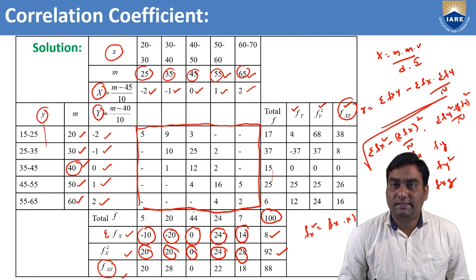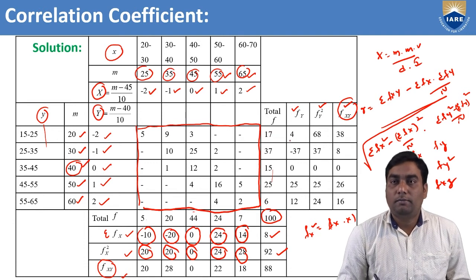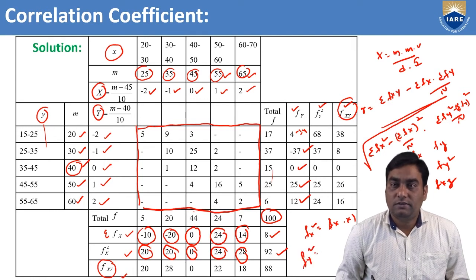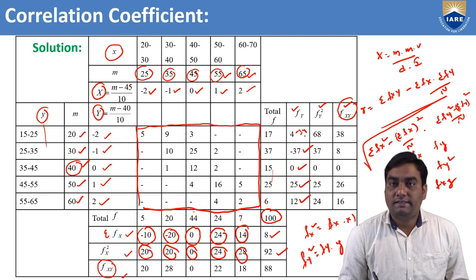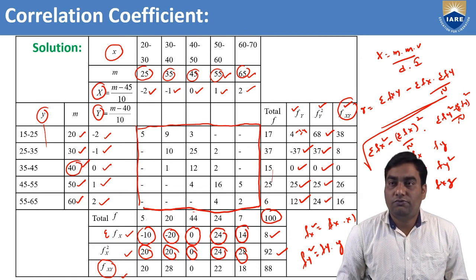For fY: multiply f by capital Y. So 17 × (−2) = −34, 37 × (−1) = −37, 15 × 0 = 0, 25 × 1 = 25, 6 × 2 = 12. For fY²: multiply fY by Y again. So −34 × (−2) = 68, −37 × (−1) = 37, 0 × 0 = 0, 25 × 1 = 25, 12 × 2 = 24. We have now obtained all required values except fXY.